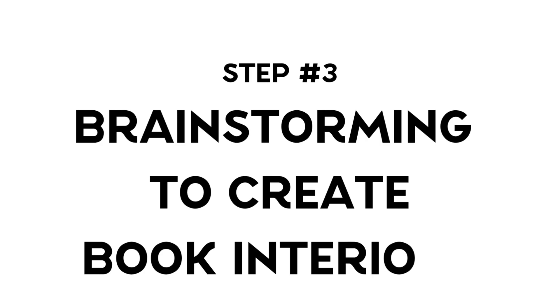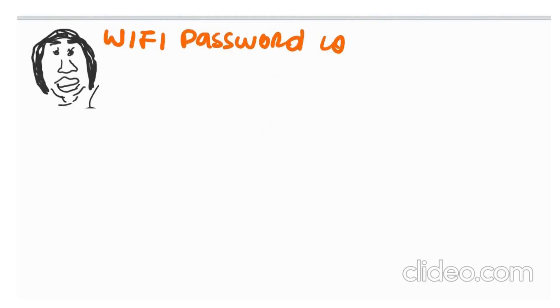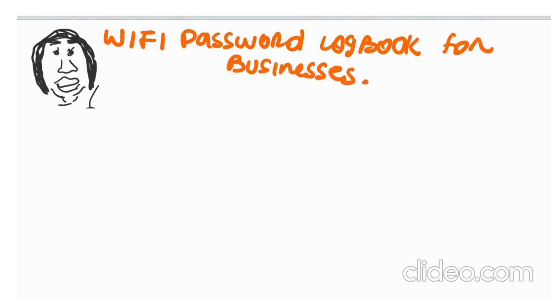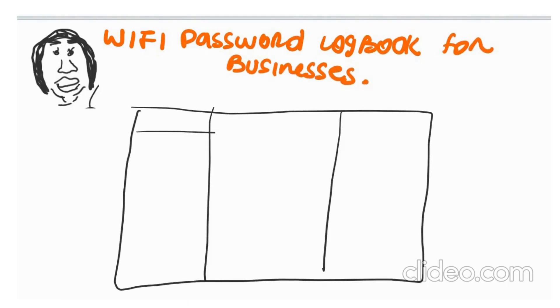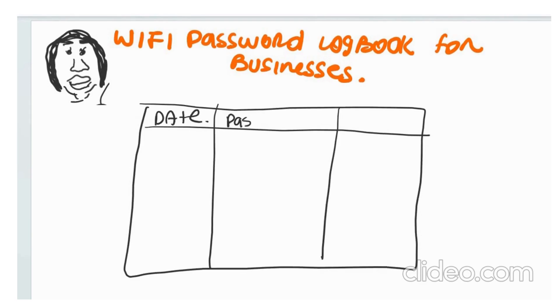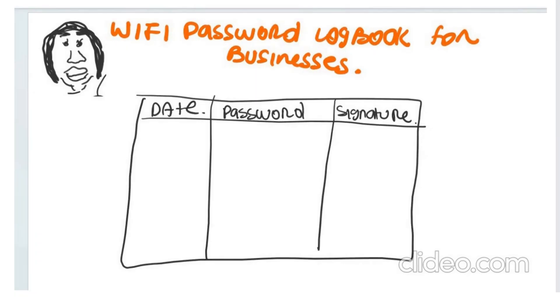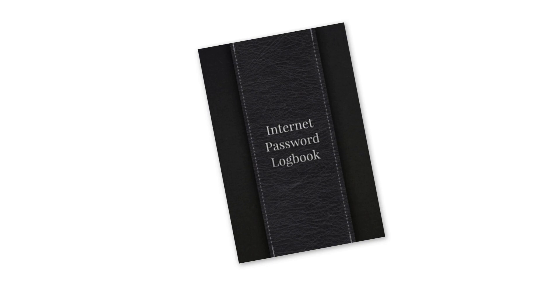Step number three: brainstorming to create book interiors. Based on these three assumption-based personas, I decided to brainstorm ideas for three different products. Product number one is a wi-fi password logbook or tracker for business owners, which will have a space to write down the date, the password of the date, and the signature of the person responsible for changing the password. This will be a book shared by the employees of the business. With this in mind, when designing the book cover, I would be inclined to give it a clean-cut, classic, professional look.